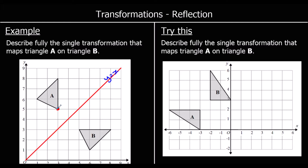For every point on A, we measure the shortest distance to the mirror line — which is diagonal this time. This red point is one away, so we go one away on the other side. For this corner, it's two and a half away, so there's a point two and a half away on the other side, which gives the corresponding point on B.